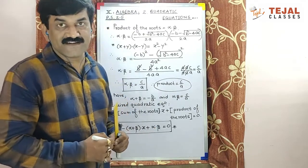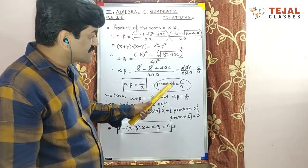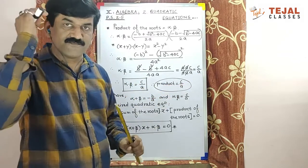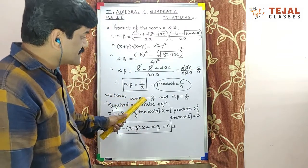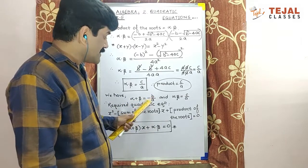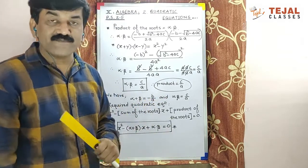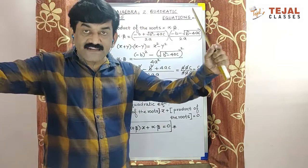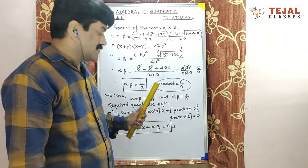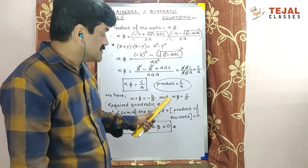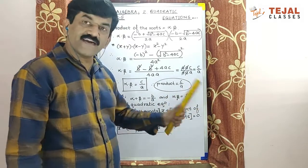Dear students, watch carefully. α×β, what is the value? c/a. Generally we write product = c/a to keep in your mind. We have α+β = -b/a. You know what? Minus coefficient of x divided by coefficient of x². So remember: minus coefficient of x upon coefficient of x², and α×β equals constant term upon coefficient of x².